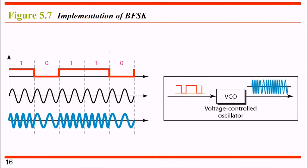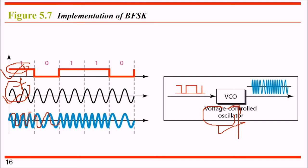To implement binary FSK (BFSK), we use a voltage-controlled oscillator (VCO). The digital signal is fed into the VCO: the frequency is higher at bit 1 and lower at bit 0. Adding the VCO to the digital signal generates the BFSK output signal.